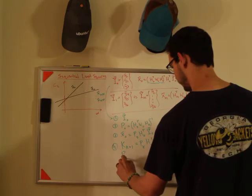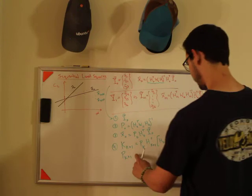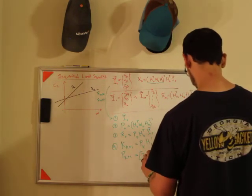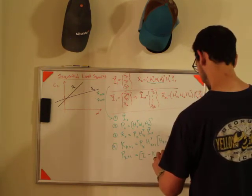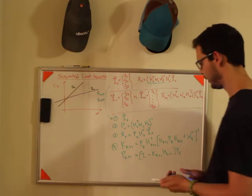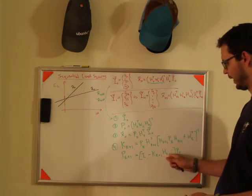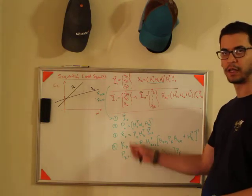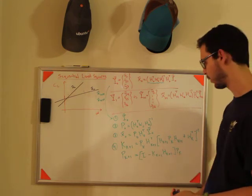pk plus 1, so that's your common, this is what's called the common gain matrix. pk plus 1 is identity minus your common gain matrix, h k plus 1, times pk. And so basically, when you get to your next measurement, this is going to be p naught, and this is going to be h1, and this is going to give you p1. You're going to get a new set of measurements, and you're going to get p2, and then p3, and then p4, and so on and so forth.